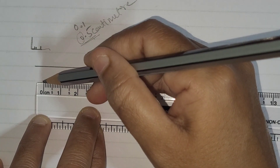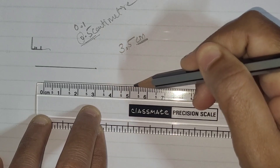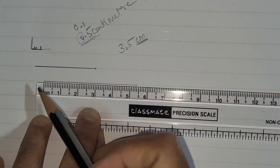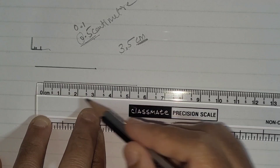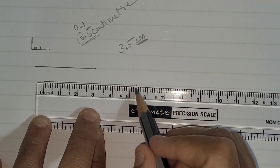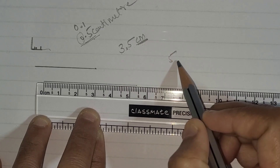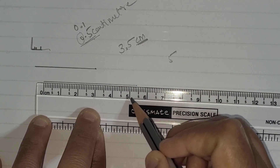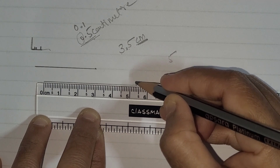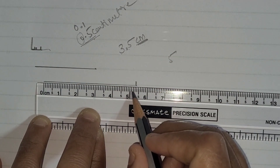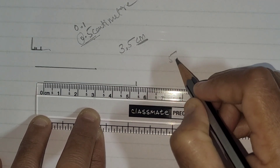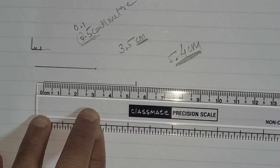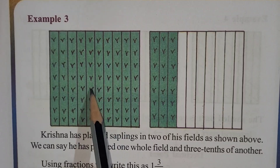I will draw one more line. Here, one, two, three, four, five - this line is crossed up to five. After five it didn't reach six, so it's lying between five and six. Counting the small lines: one, two, three, four. So the answer is 5.4 centimeters.